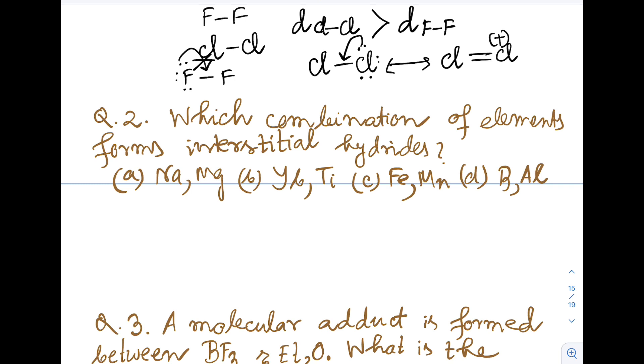D-block elements which are situated in the middle of the d-block are prone to form interstitial hydrides. Sodium, magnesium are s-block, they don't. Iron and manganese, though they are d-block, are 3d elements and generally do not form interstitial hydrides, but titanium and ytterbium form. So Yb and Ti will be the answer.